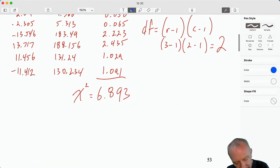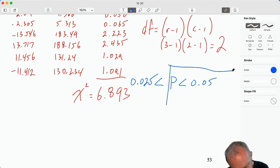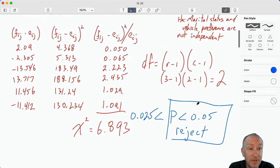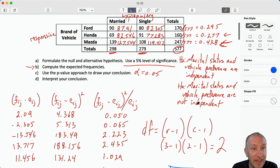So our p-value is less than 0.05. It was greater than 0.025. This gives us sufficient evidence to reject our null hypothesis. We do have evidence to show that marital status and vehicle preference are not independent. So there does exist some kind of relationship between those two variables.